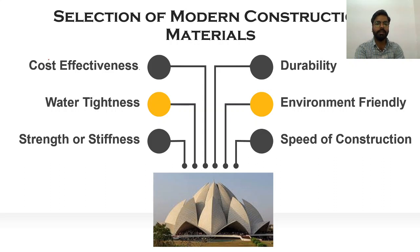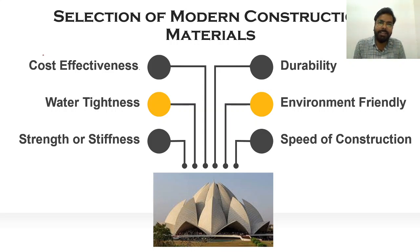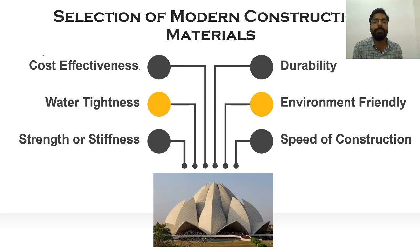Another important topic is the selection of modern materials. There are many selection factors, but the most important ones are cost effectiveness, durability, water tightness, environmental friendliness, strength and stiffness, and speed of construction. Cost effectiveness is not simply about being cheap — it means getting the best from the least.